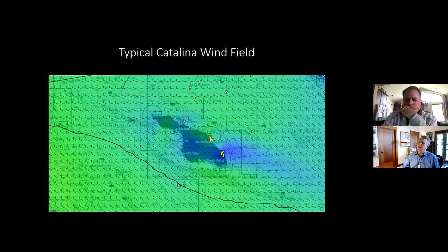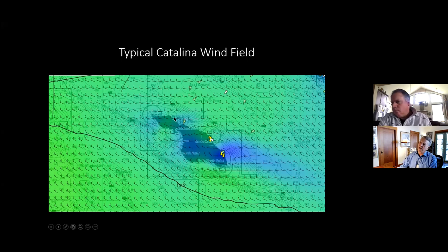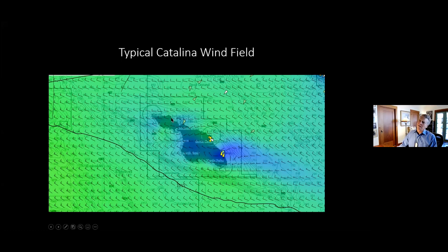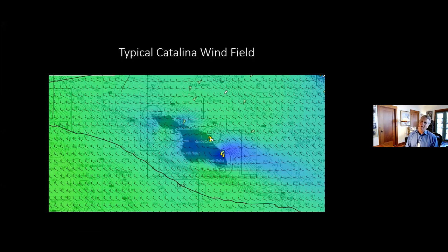Here's the typical Catalina wind field. One key feature is the isthmus fan — the westerly that blows through the isthmus fans out from there, and at the edge of that fan there's a semicircular light-air zone running from about Cherry Cove around, sometimes reaching as far as Howlands. If you didn't get enough of a lift to lay the isthmus, watch out for that isthmus fan. If you see it, tack before you reach it — take port until you can lay Arrow Point, then come back in.